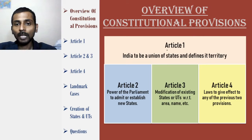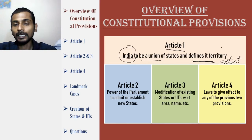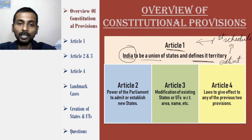First of all, Article 1 tells what is India. It says India is a union of states and further defines its territory — that is, its extent — in detail. This extent is written in the First Schedule of the constitution. So the First Schedule owes its origin to Article 1 itself.